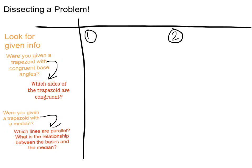Now at the very bottom of your page we're going to be dissecting two different problems and what we're going to be asking ourselves is what's the given information? Was I given a trapezoid with congruent base angles? Well then which sides of the trapezoid are congruent? Or was I given a trapezoid with a median? Then which lines are parallel and what's the relationship between the bases and the median?